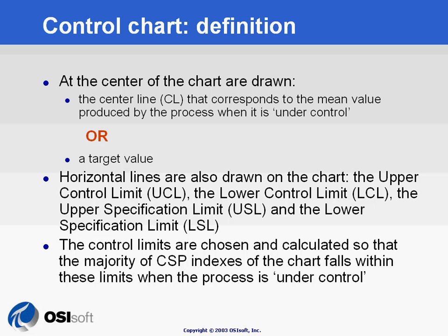Then there are other lines: the upper control limit and the lower control limit, defined as the three-sigma limits. Beside that, we'll have the upper specification limits and the lower specification limits, from which we can derive the CP and CPK values.